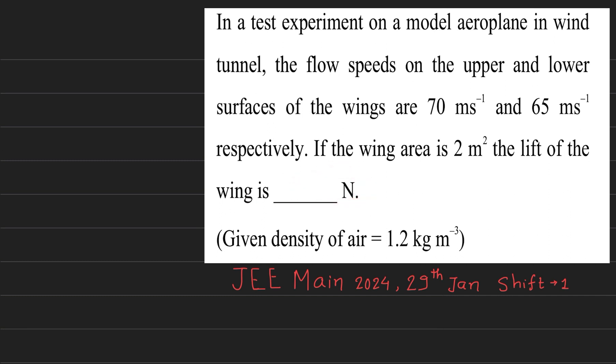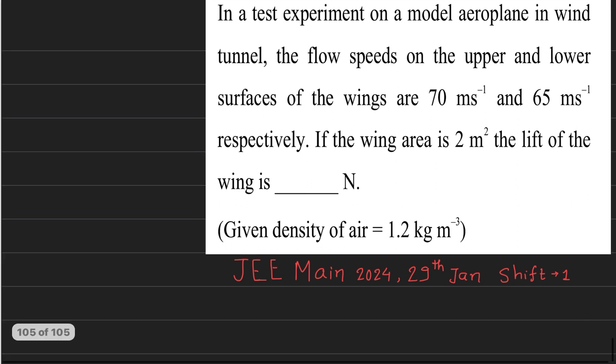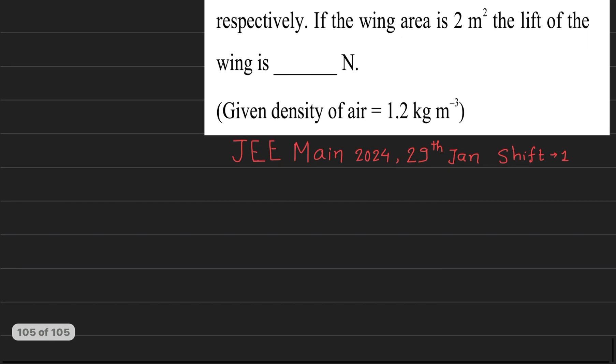So we need to find the force on the wings. We'll use Bernoulli's theorem. In Bernoulli's theorem, pressure plus half rho v squared plus rho g h equals constant.